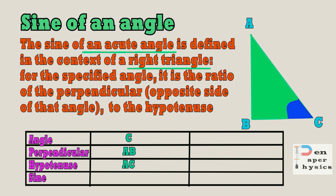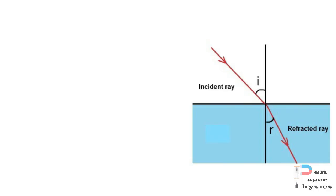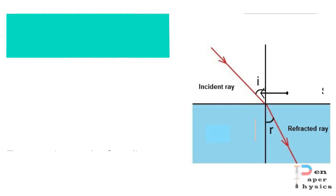With respect to angle C, the perpendicular is AB and the hypotenuse is AC, so sine of angle C is AB divided by AC. For angle A, the perpendicular is BC and hypotenuse is AC, so sine A is BC divided by AC. Let us now move to the second law of refraction.